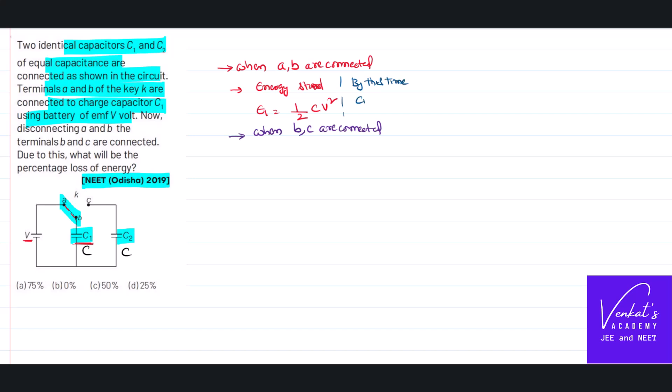C1 has got charged to Q equal to CV. Now that is disconnected from here, it is disconnected and now connected to BC. So be careful when it was connected this way. This C, the first capacitor C, is not empty. It already had a charge Q.